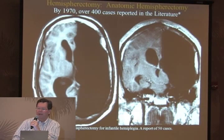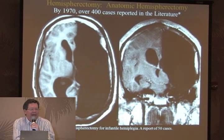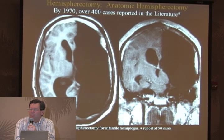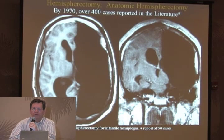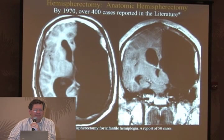This MRI shows a traditional, classic, anatomic hemispherectomy. The original hemispherectomy was not done for epilepsy - it was actually done for tumors by a man named Dandy in the late 1920s.